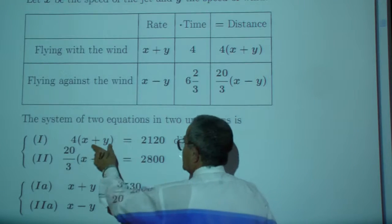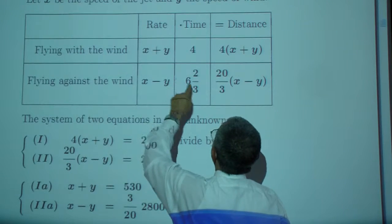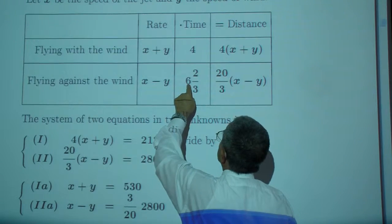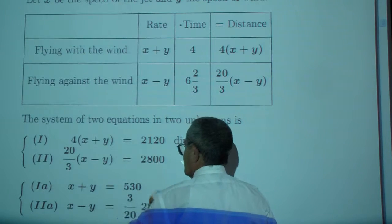So 4 times x plus y is 2,120. And 20 over 3, 20 over 3, 6 times 3, 18 plus 2, 20, times x minus y is 2,800.